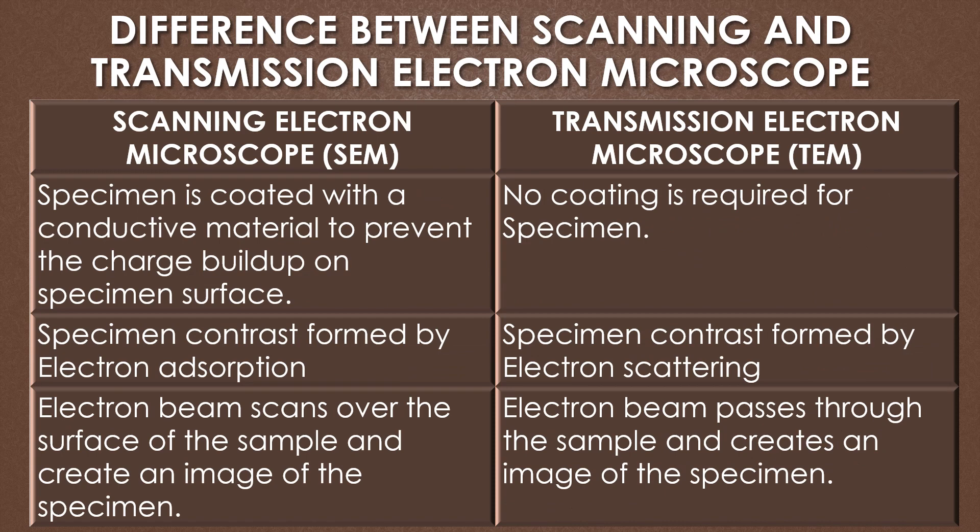In the SEM, the specimen is coated with a conductive material to prevent charge buildup on the specimen surface. In the TEM, no coating is required. Regarding specimen contrast, in the SEM it is formed by electron absorption, but in the TEM the specimen contrast is formed by the scattering of electrons.